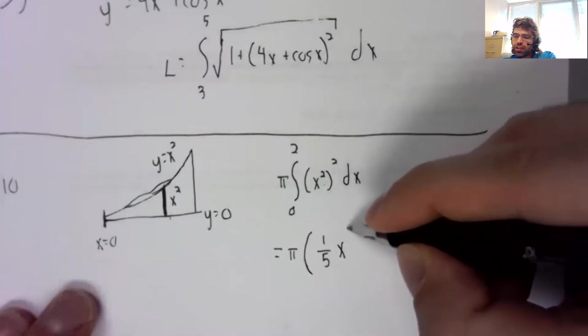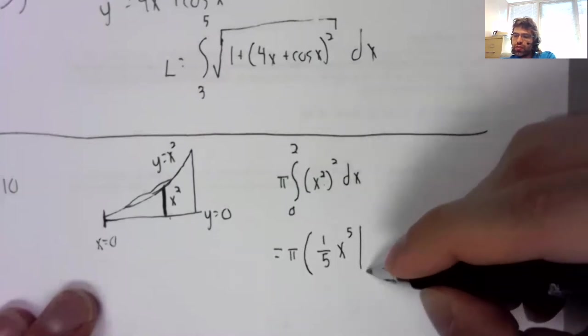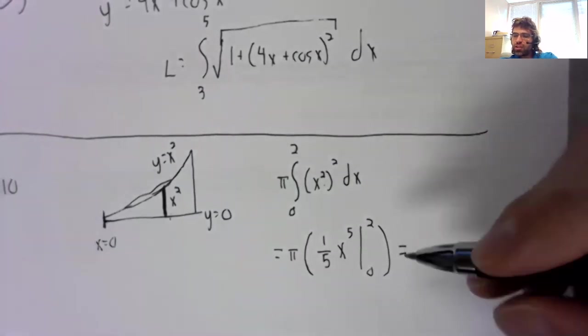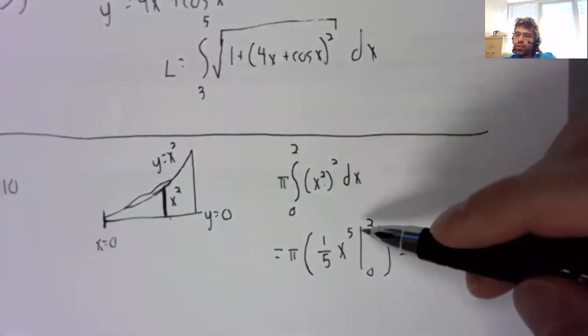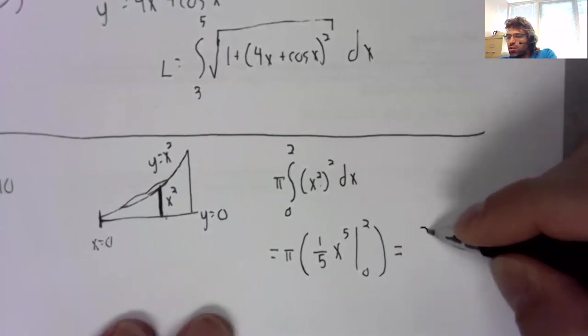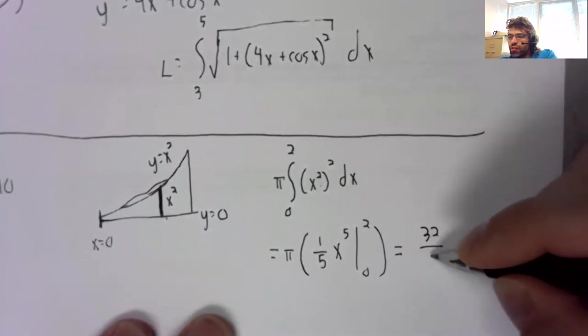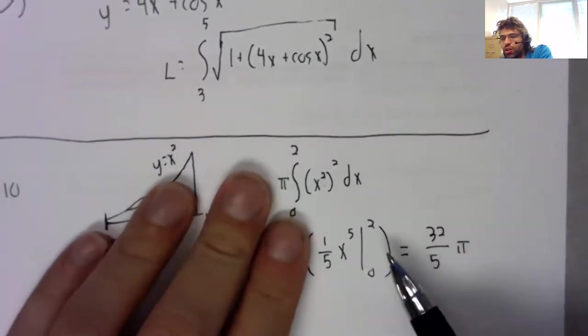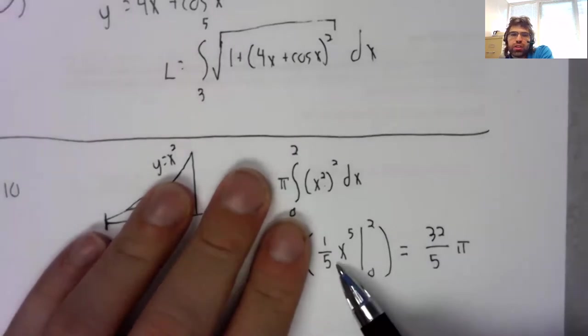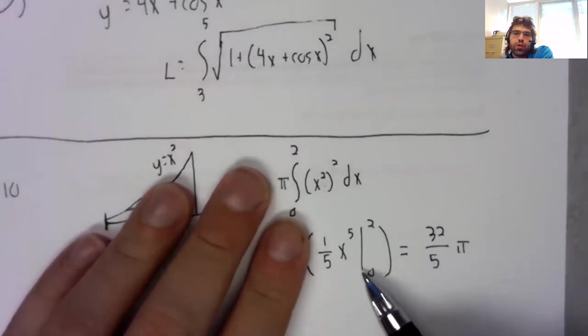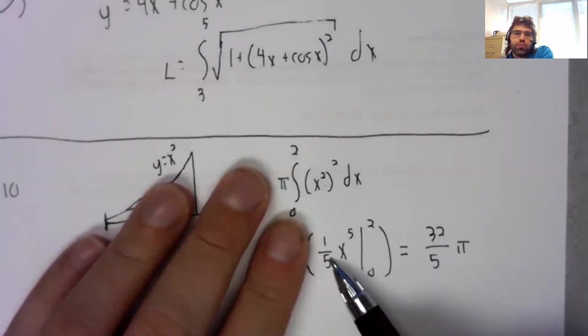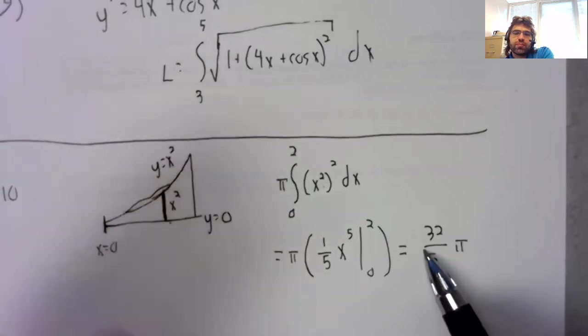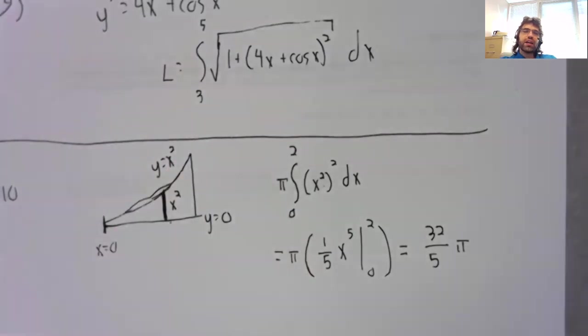So this is x to the fourth. The antiderivative is one fifth x to the fifth. Two, four, eight, 16, 32 fifths pi. When you plug two in here, you get 32 fifths. When you plug zero in, you get zero. So you subtract those, you get 32 fifths. And then you have that pi.